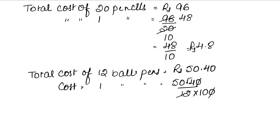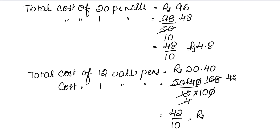Dividing 50.40 by 12: 3 ones are 3, 3 fours are 12, 3 ones are 3, 3 sixes are 18, 3 eights are 24; then 4 ones are 4, 4 fours are 16, 4 twos are 8. This gives 42 upon 10, which is Rs. 4.2. So the cost of 1 ball pen is Rs. 4.20.